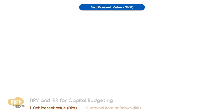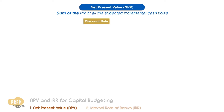The net present value is the sum of the present values of all the expected incremental cash flows if a project is undertaken. The discount rate used is the firm's cost of capital adjusted for the risk level of the project.